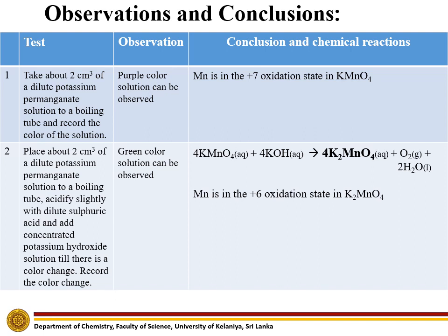In the second step, when this purple color solution is basified, it converts into a green color solution. This is due to the reduction of potassium permanganate to potassium manganate — that means from the +7 oxidation state to the +6 oxidation state. Therefore, this green color potassium manganate solution denotes the +6 oxidation state of Manganese.